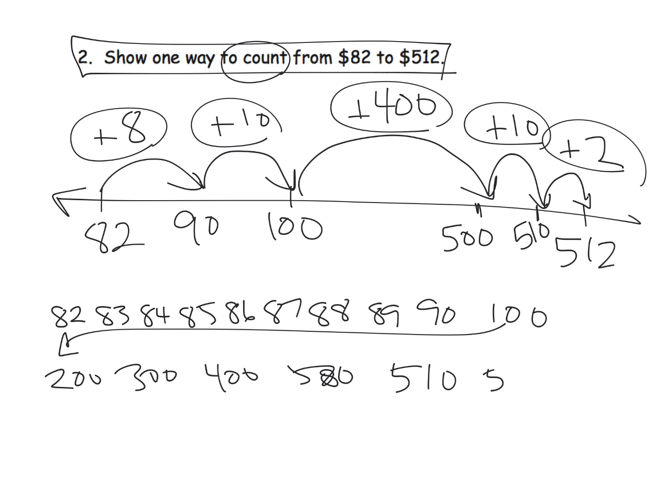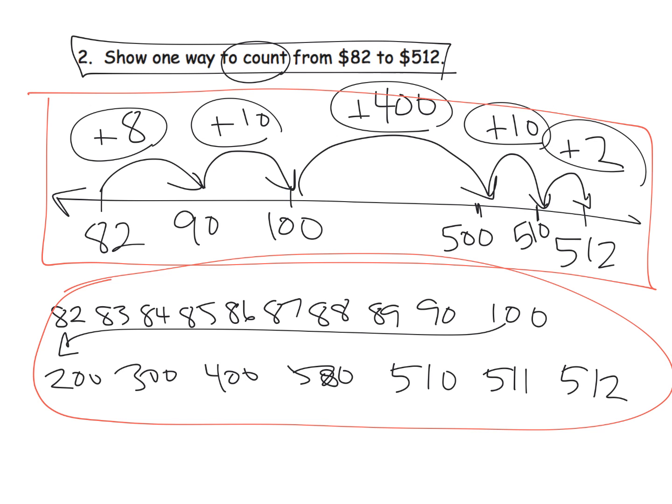And then 511, 512. I think this is really what they're looking for in terms of counting, but you can see that a number line is essentially the same kind of thing but a whole lot less work.